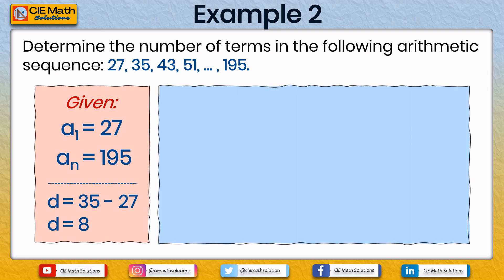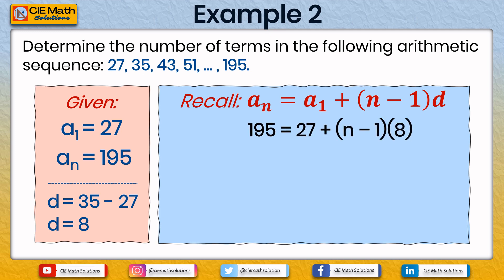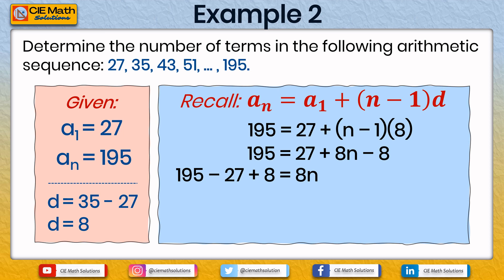Substituting into the nth term formula: 195 equals 27 plus n minus 1 times 8. Simplifying: 195 equals 27 plus 8n minus 8. Combining constants: 195 minus 27 plus 8 equals 8n, which gives 176 equals 8n. Dividing both sides by 8, we get n equals 22. Therefore, there are 22 terms in this arithmetic sequence with common difference 8, first term 27, and last term 195.